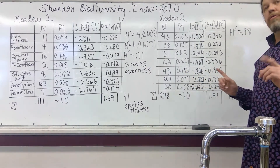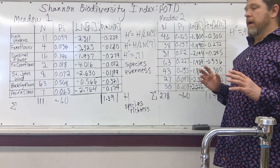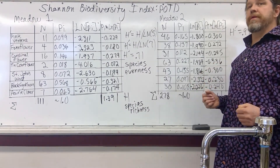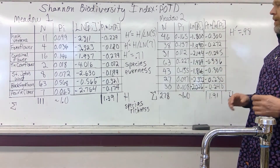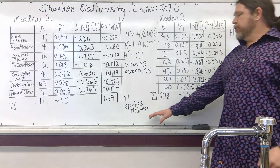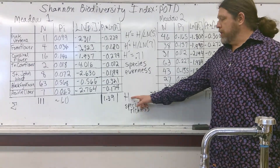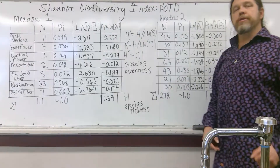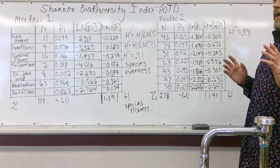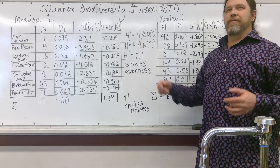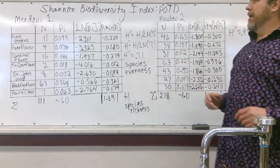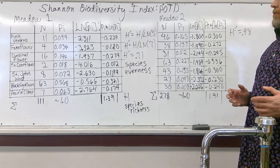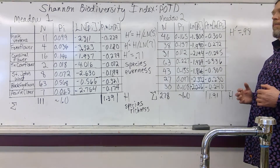The Shannon Biodiversity Index has two basic ways of measuring biodiversity, with a couple of others that integrate into it. We're going to focus on species richness, denoted with H-apostrophe, and species evenness. So let's say we have two plots—two meadows somewhere in the Nashville Basin.